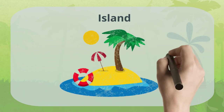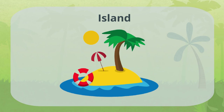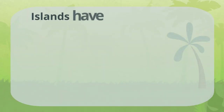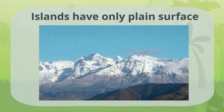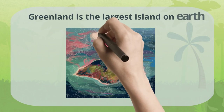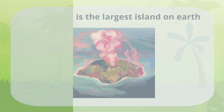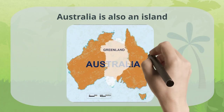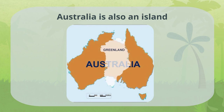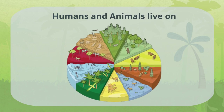Island: An island is a piece of land that is surrounded by water from all sides. Some islands have only plain surfaces, while others have mountains or hills on them as well. Greenland is the largest island on Earth. Australia is also an island because it is completely surrounded by water. Humans and animals live on all types of landforms, but mostly they live on plains, which are flat surfaces.